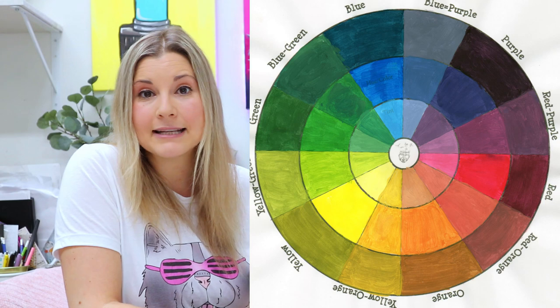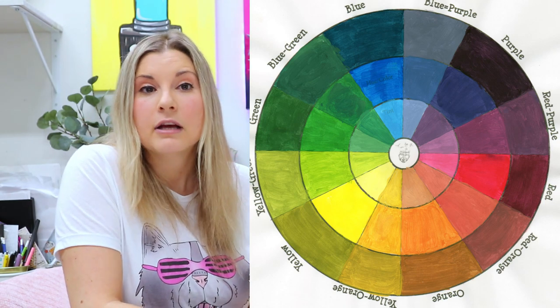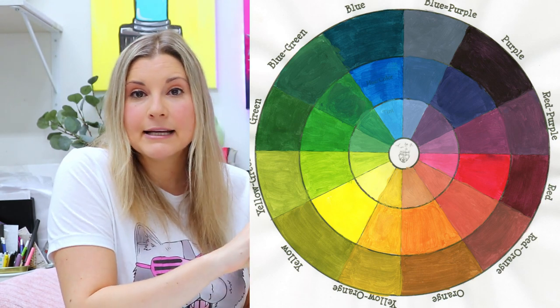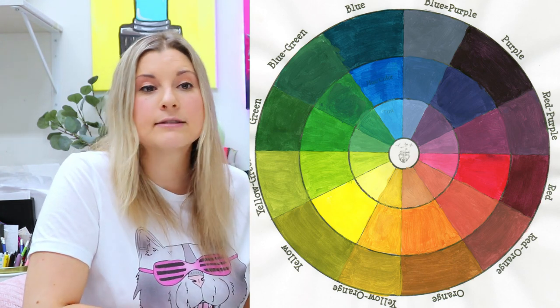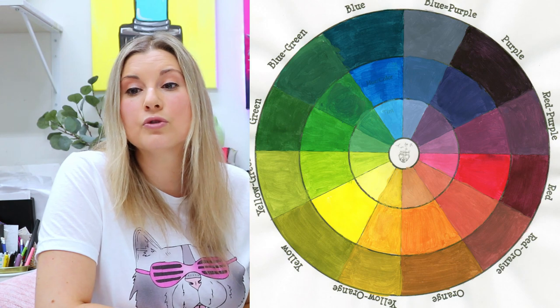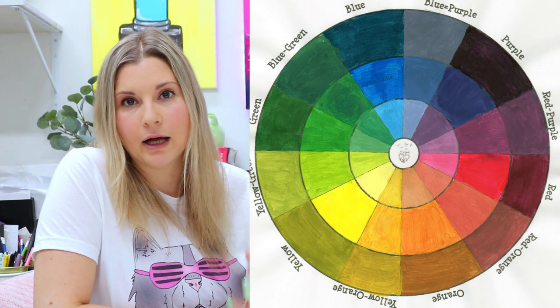Before we begin on drawing and making an artwork, we're going to take a look at a color wheel. So a color wheel displays primary, secondary, and tertiary colors. It's a tool that we can use to mix our colors.